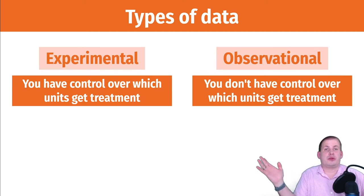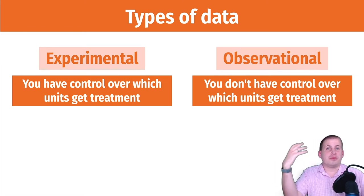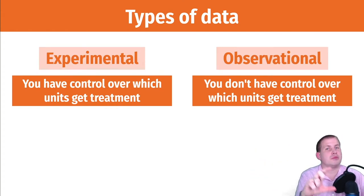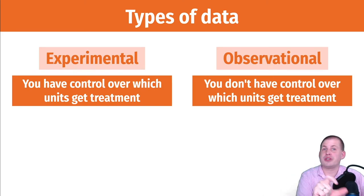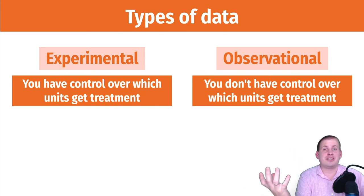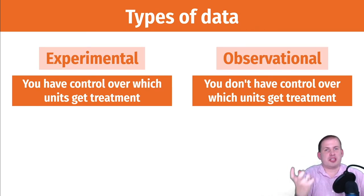With observational data, you don't have control over who gets treatment. A non-profit might just start rolling out a program and anybody can sign up. You could measure the outcome for people who did the program versus those who didn't and subtract to figure out the program effect. The issue is that the people who didn't participate are fundamentally different from those who did — they self-selected in — so there's something different about them, and we can't logically say they are the same.